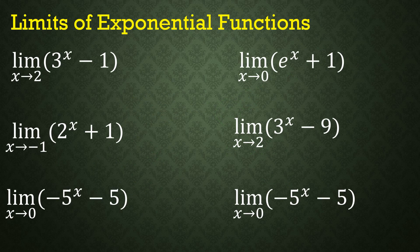To evaluate the exponential function, we can just do direct substitution. For example number 1: the limit of 3^x - 1 as x approaches 2. We substitute x = 2 into 3^x - 1, giving 3^2 - 1 = 9 - 1, which equals 8.